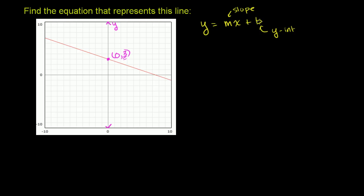If x equals 0, y equals 3. So b equals 3. Now the next thing we need to do is figure out the slope of this line, figure out what m is going to be equal to.